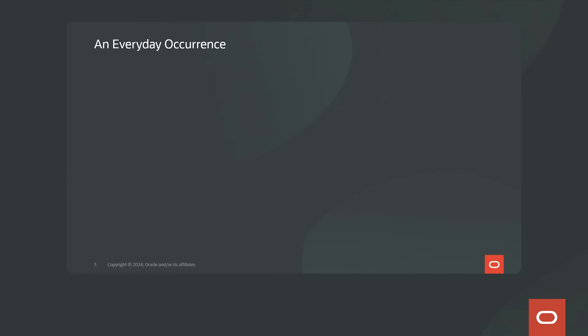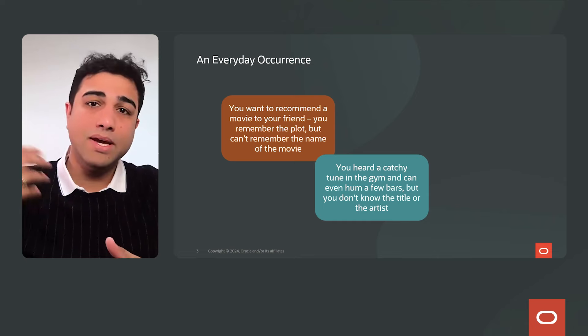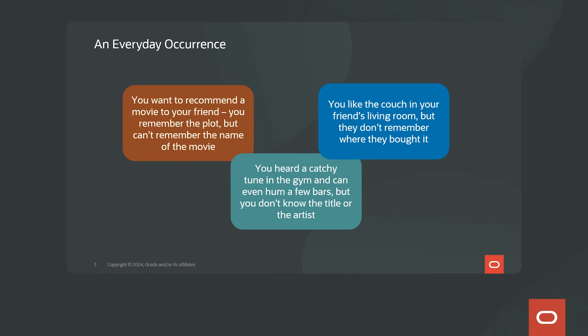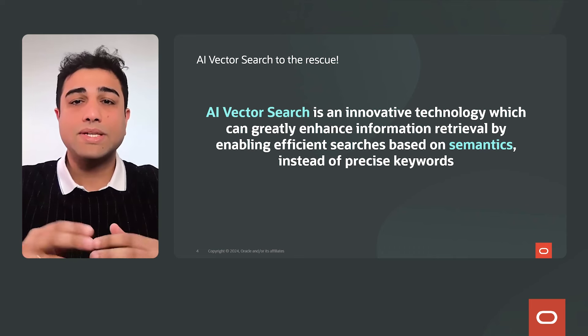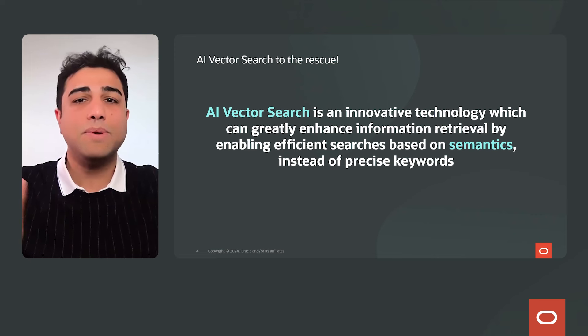Every day, you find yourself in situations where you're searching for something. For example, you saw a movie over the weekend and want to recommend it to your friend — you can remember the plot but not the name. You're exercising in the gym, you hear a song, you can hum a few bars but don't know the title or artist. You visit your friend's place and like their couch, but they don't remember where they purchased it.